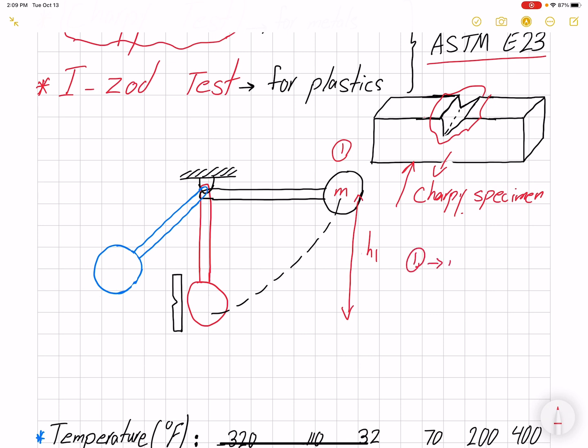In condition one, the energy we have is all potential: Mgh1. In condition two, before contact, all we have is kinetic energy. According to conservation of energy, we can find the velocity before and after contact.